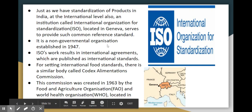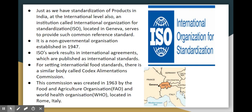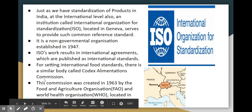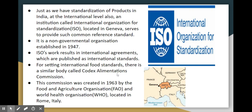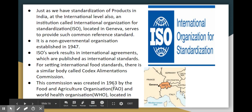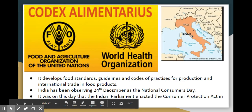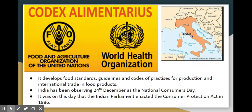ISO is a non-governmental organization established in 1947. It publishes international standards and agreements. For international food standards, there is a body called the Codex Alimentarius Commission, established in 1963 by the Food and Agriculture Organization and the World Health Organization, headquartered in Rome, Italy.